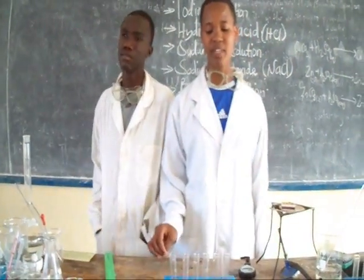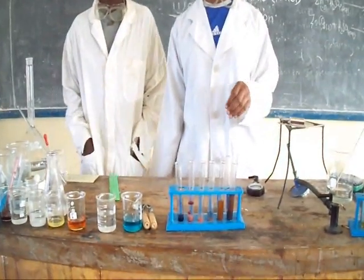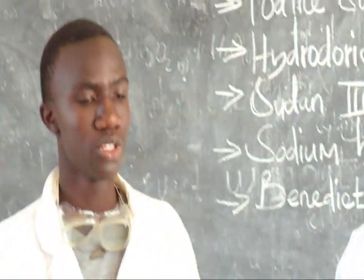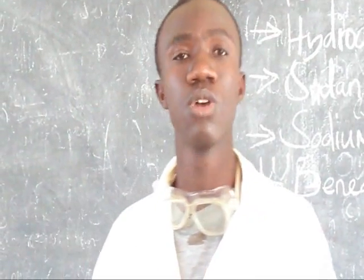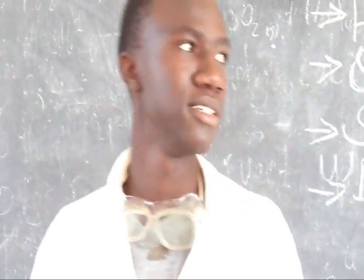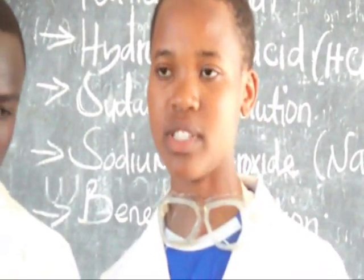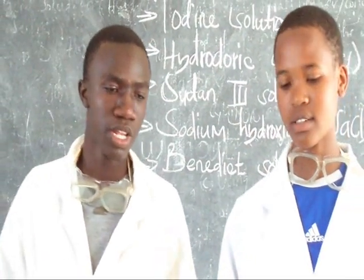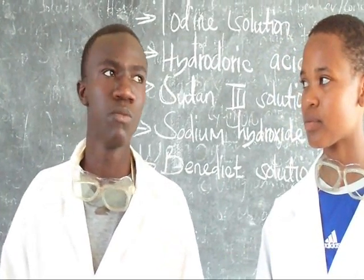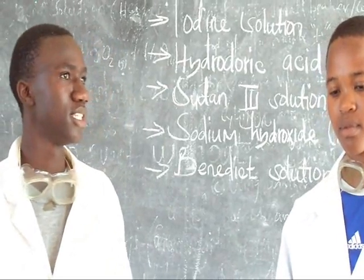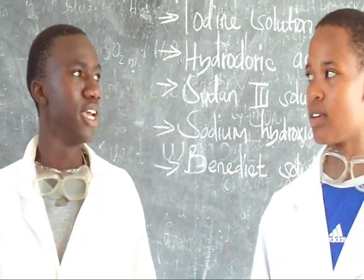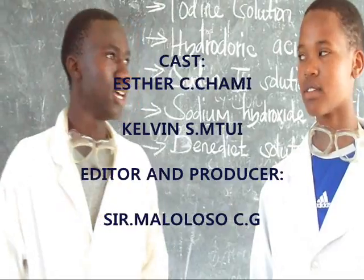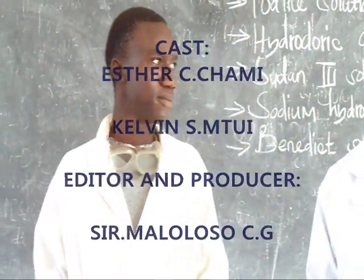We have now reached the end of our experiment. We have tested various food samples. The importance of food testing is that it enables a person to know the required meals for a balanced diet — to know what kinds of meals to eat to maintain a balanced diet. For example, lipids can be obtained from milk, groundnuts, sunflower, and coconuts. Proteins can be obtained by eating meat and eggs.